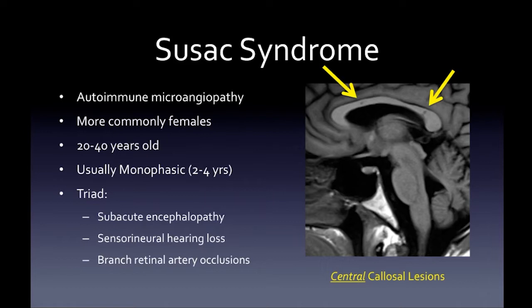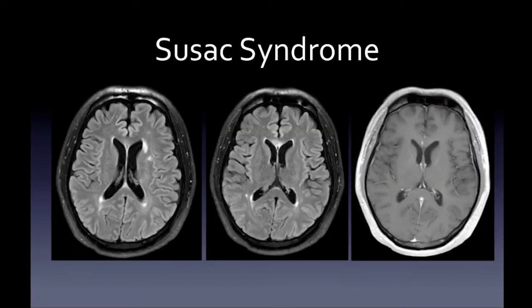Susac syndrome is another MS mimic — an autoimmune microangiopathy, more common in females aged 20-40, overlapping the MS demographic, but usually monophasic over two to four years. The clinical triad: subacute encephalopathy, sensorineural hearing loss, and branch retinal artery occlusion. These patients have hearing and vision loss not typical of MS. Importantly, Susac syndrome produces central callosal lesions in the mid-portion of the corpus callosum, rather than the callosal-septal interface location seen in MS.